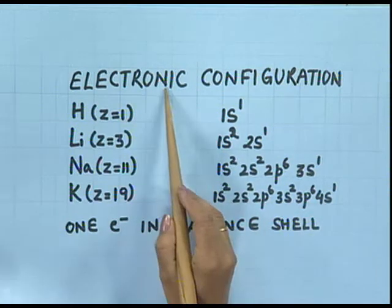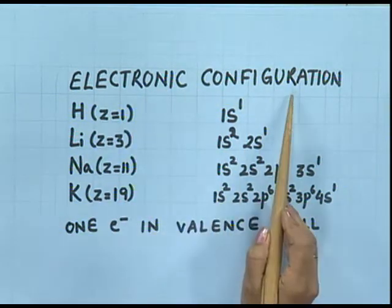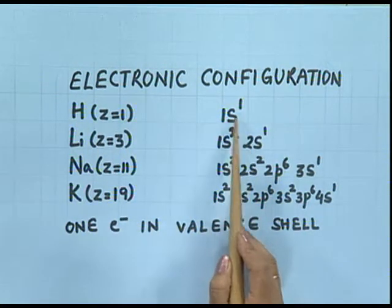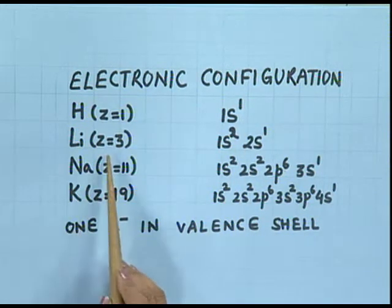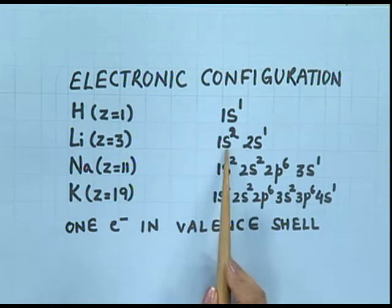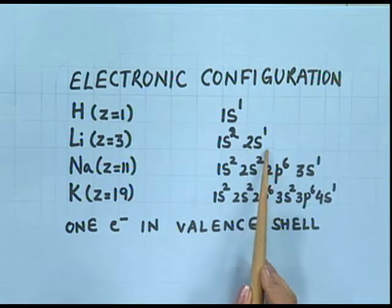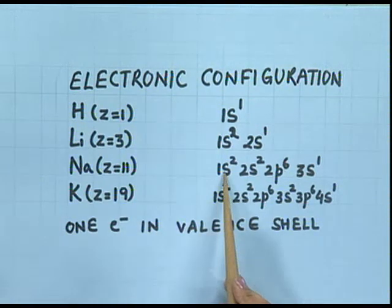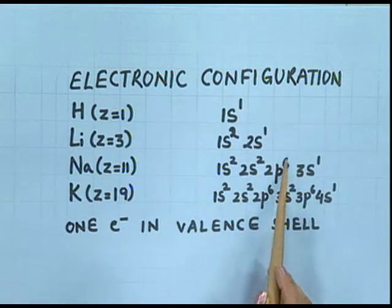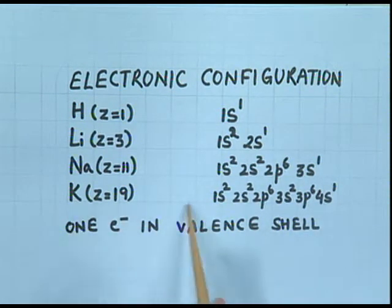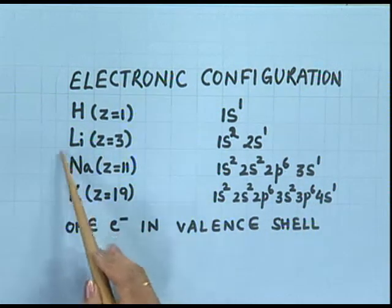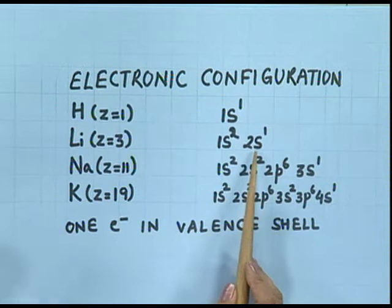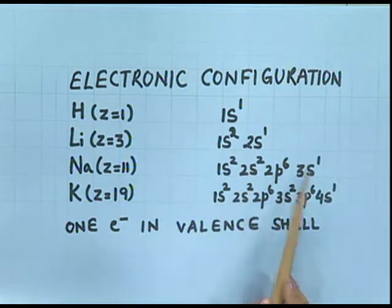The first point of resemblance is their electronic configuration. Hydrogen, atomic number 1, has electronic configuration 1s1. Lithium, atomic number 3, has electronic configuration 1s2, 2s1. So we can see that, just like alkali metals, hydrogen also has one electron in its outermost shell and that is also in the s orbital.